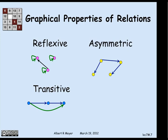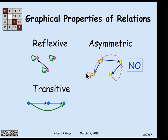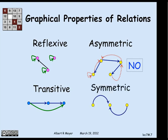Asymmetric means that whenever you have an edge from one vertex to another, there is no edge back. So if there's an edge from this vertex to that vertex, there is no edge going back in the other direction, nor is there ever a self-loop in an asymmetric graph. In a symmetric graph, wherever there's an edge, there is an edge that goes back the other way. That can help you remember what these properties mean.